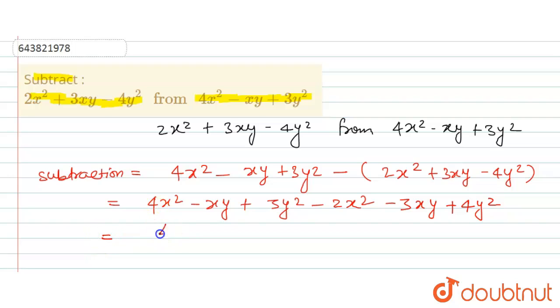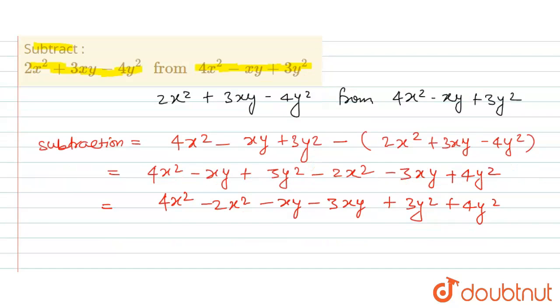Now we will make groups of like terms: 4x² and minus 2x², then minus xy and minus 3xy, and the y² terms which are plus 3y² and plus 4y².